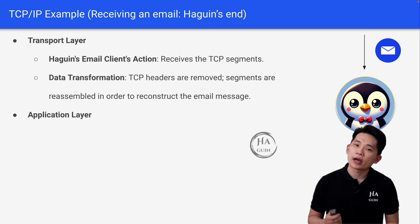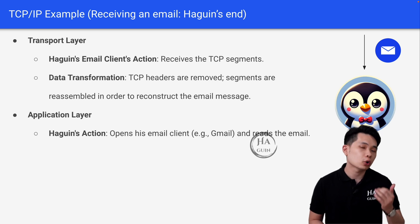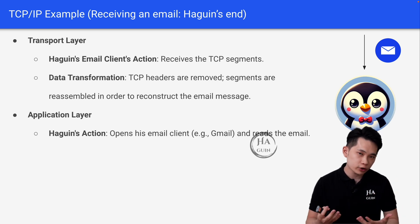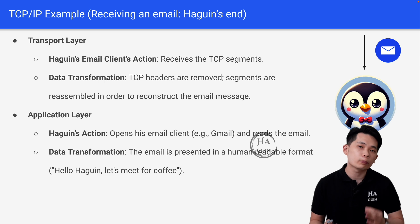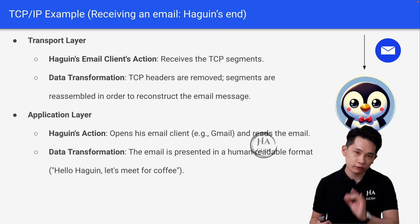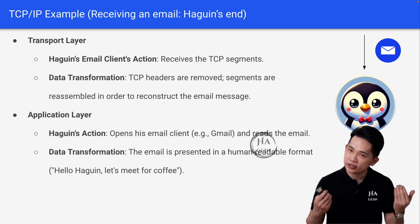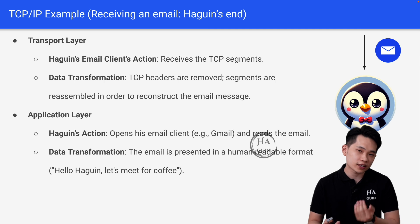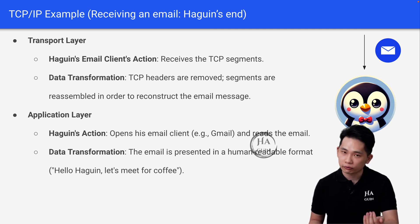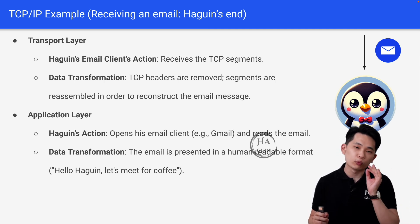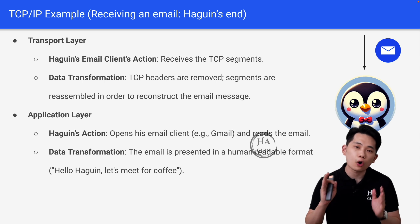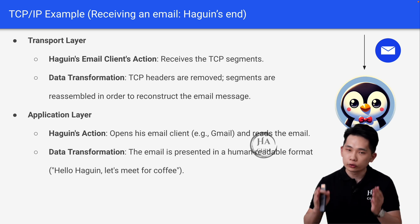Finally, at the application layer, Hagrin will open his email client such as Gmail and read the email. The email will be presented in the original human-readable format: "Hello Hagrin, let's meet for coffee." This is how the end-to-end workflow works, from the sending side all the way to the receiving side.